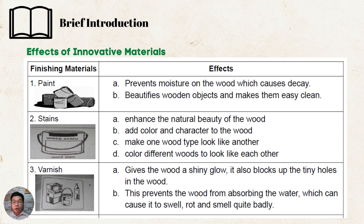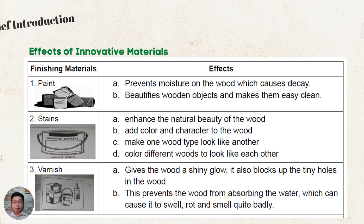The third finishing material is varnish. First, it gives the wood a shiny glow. It also blocks up the tiny holes in the wood. Second, this prevents the wood from absorbing water, which can cause it to swell, rot, and smell quite badly.